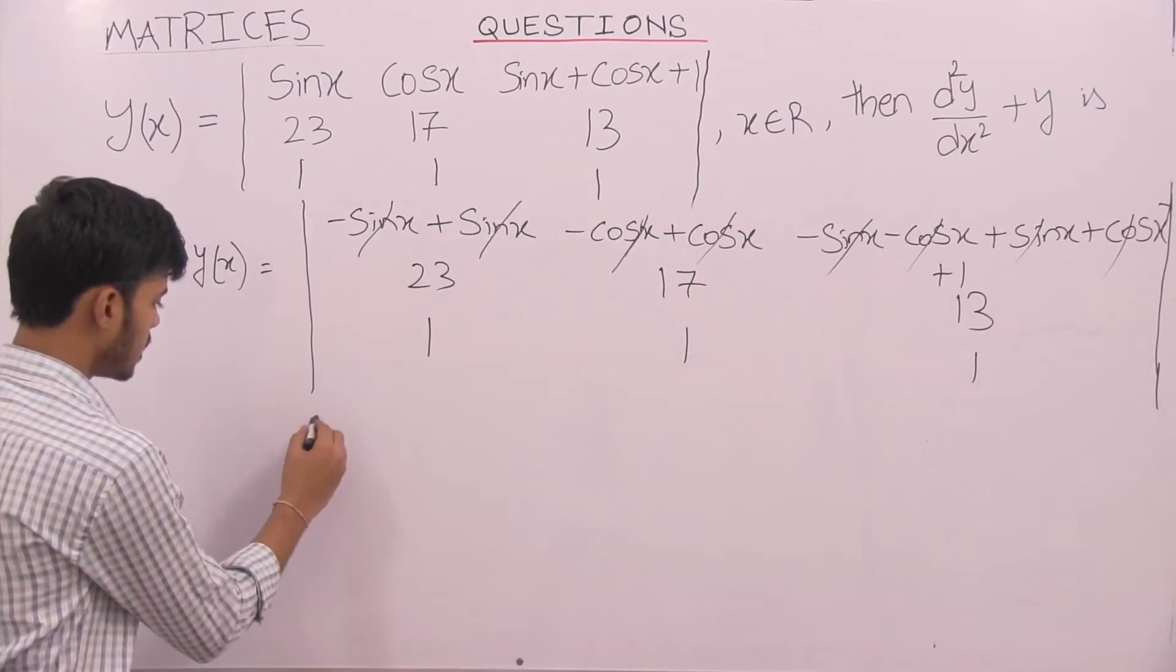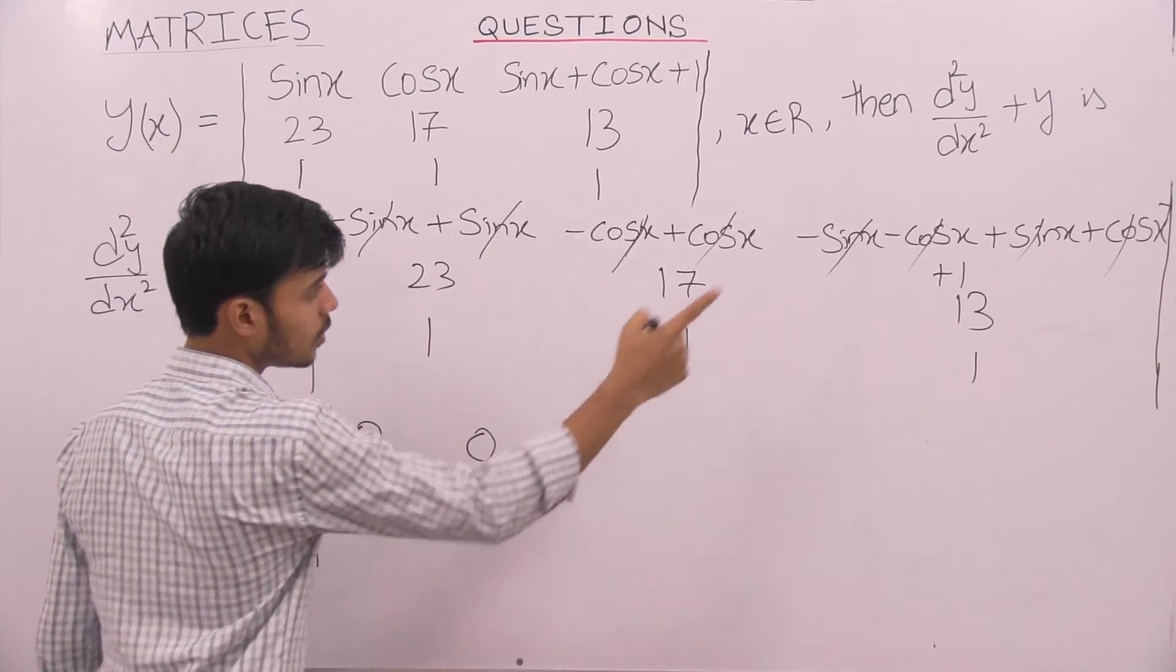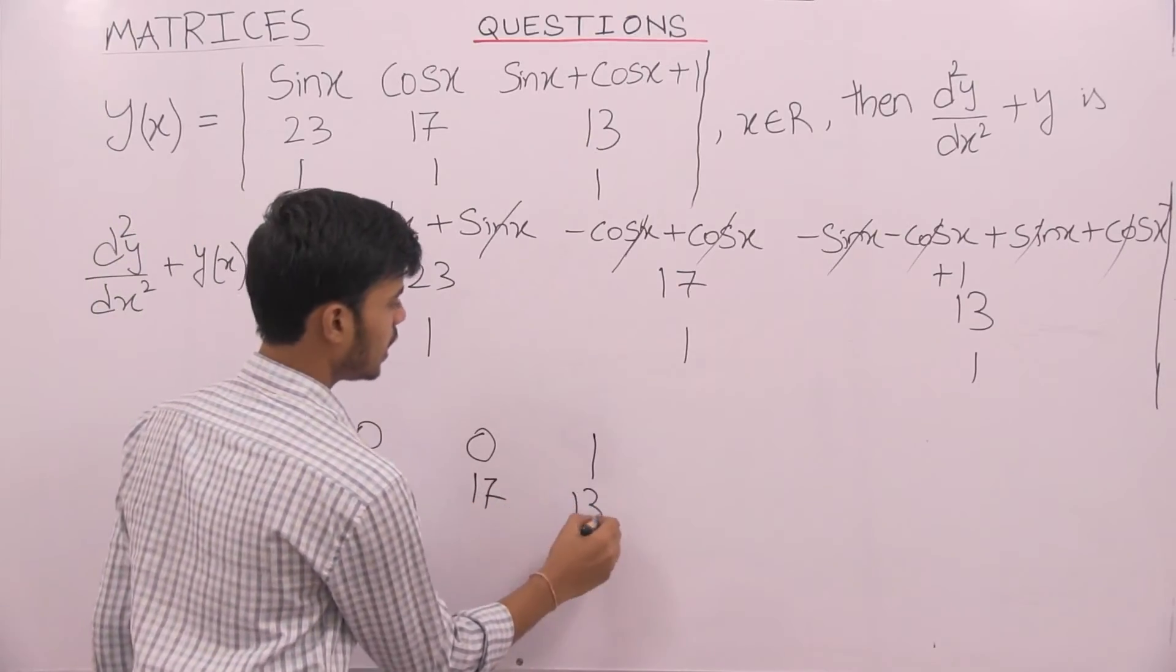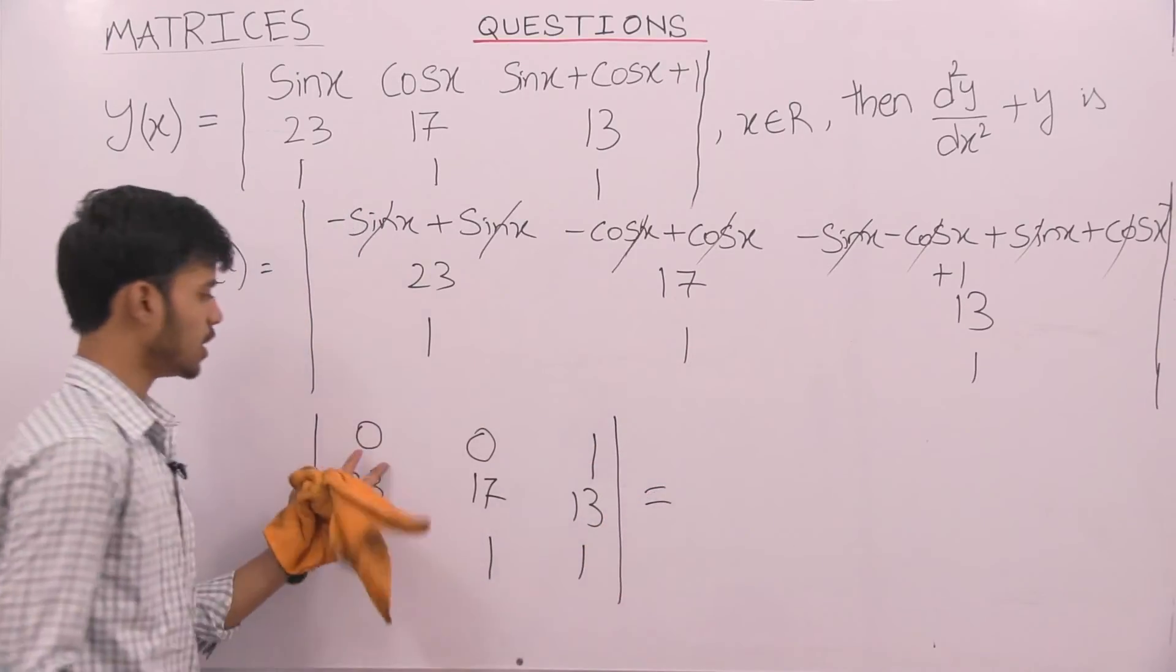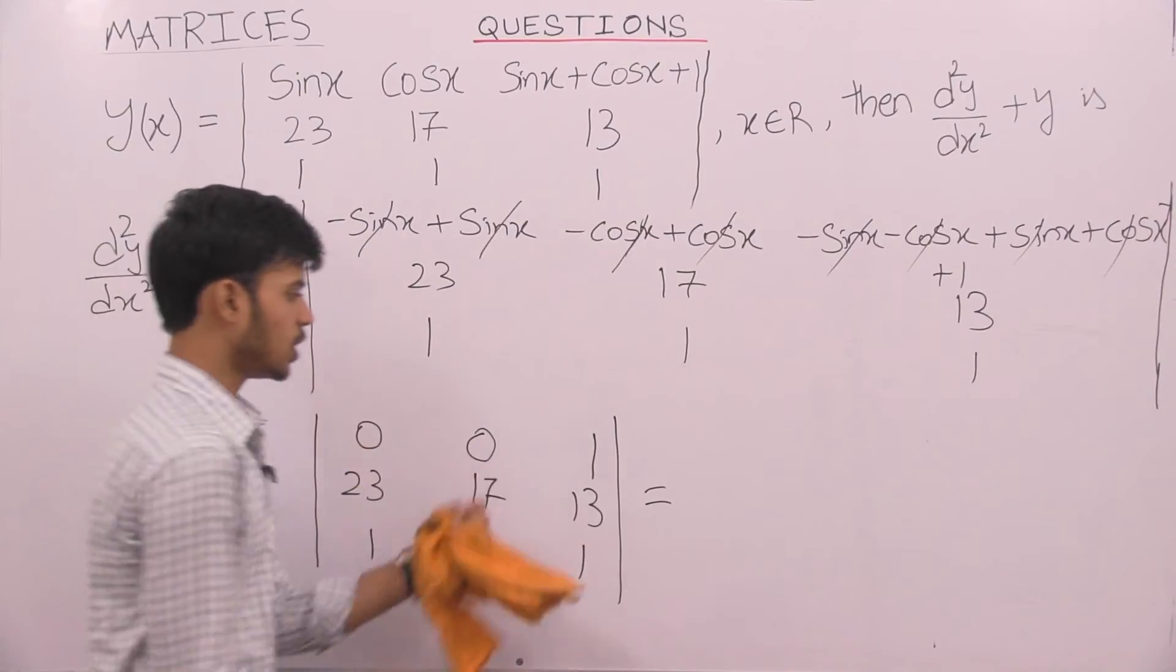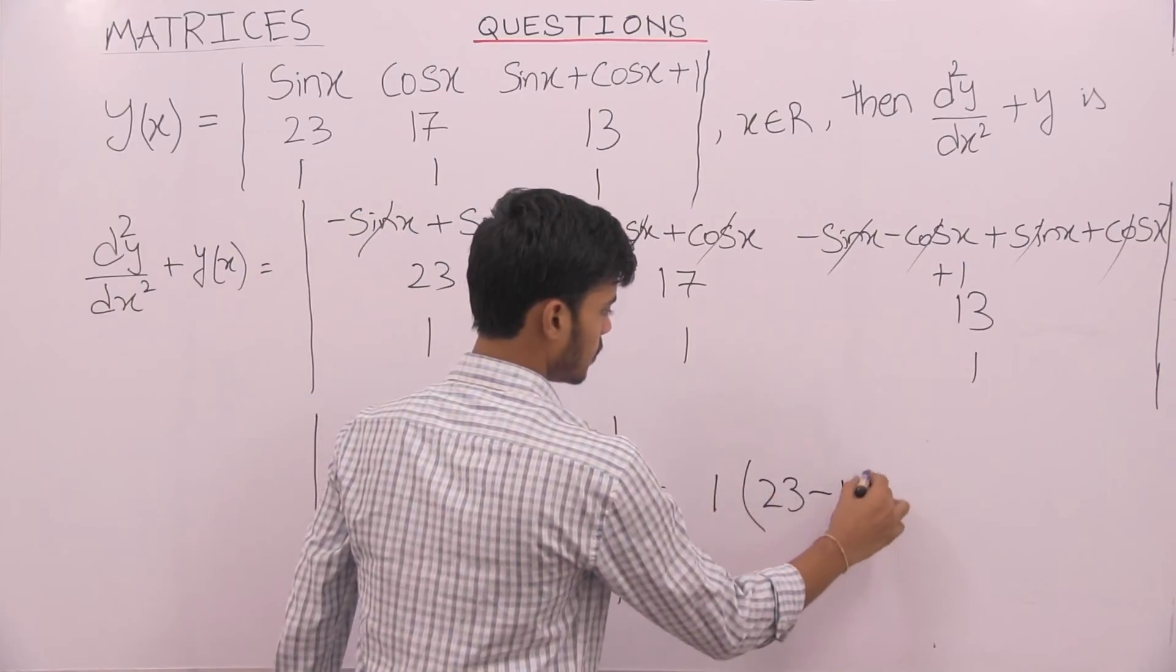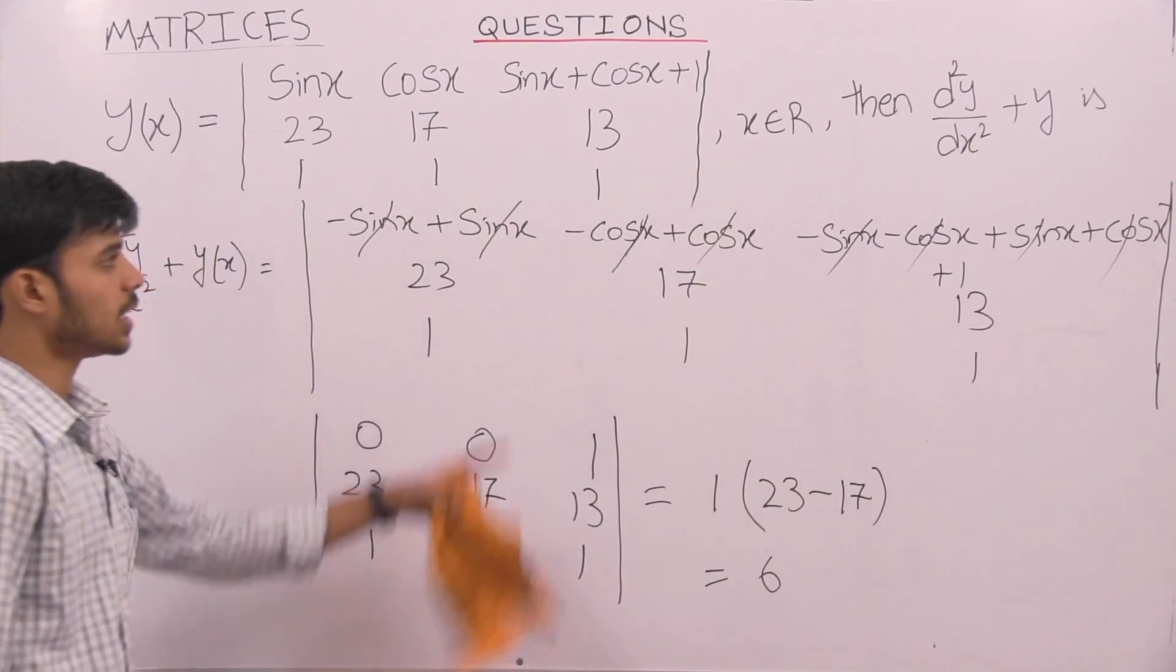So, we have a determinant of 0, 0 and 1, 23, 17, 13, 1, 1 and 1. This gives us 0 into this part 0, 0 into the other part 0. So, we have the last 1 into 23 minus 17 which is 6. So, that is the answer.